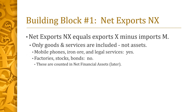The balance of payments has a number of building blocks. The first is net exports, abbreviated NX. NX simply equals a country's exports X minus its imports M. Importantly, NX includes only goods and services — examples include mobile phones, iron ore, and legal services. NX excludes assets, which may be physical assets such as factories, or financial assets such as stocks and bonds. These are counted in a later building block called net financial assets.